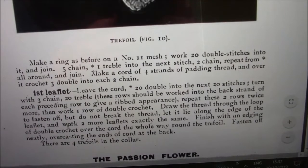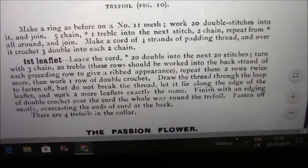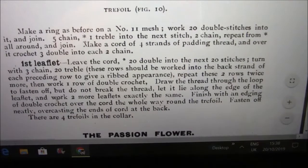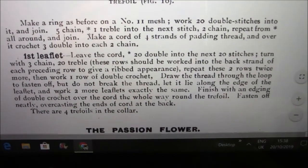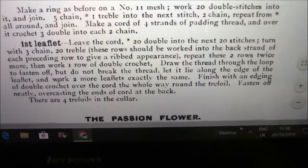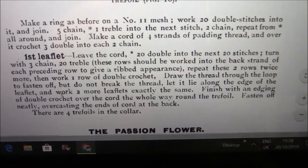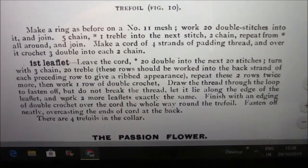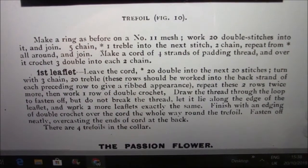Then it says to make a cord of 4 strands of padding thread, and over it crochet 3 double into each 2 chain. For the leaflet leave the cord, 20 double into the next 20 stitches, turn with 3 chain and then 20 treble. These rows should be worked into the back strand to give a ribbed appearance. Repeat these 2 rows twice more, then work 1 row of double crochet. Draw the thread through the loop and fasten off, but do not break the thread. Let it lie along the edge of the leaf and work 2 more leaflets exactly the same. Finish with an edging of double crochet over the cord the whole way round the trefoil.